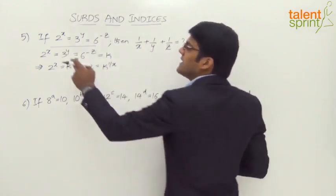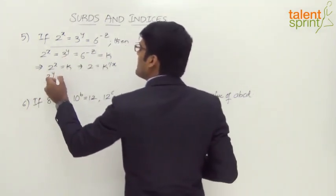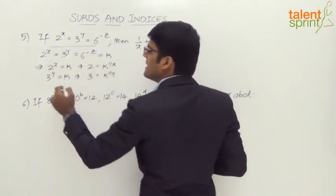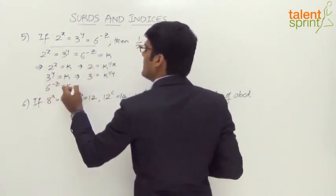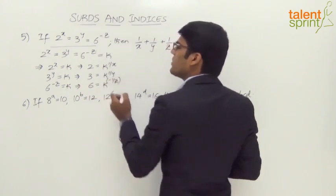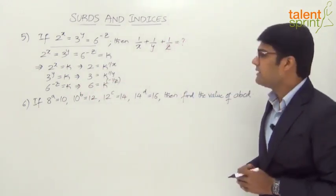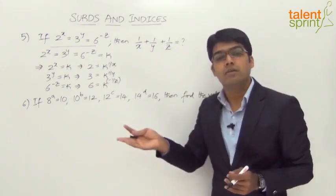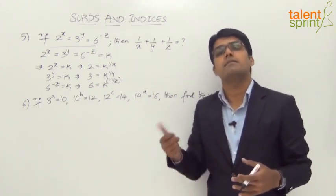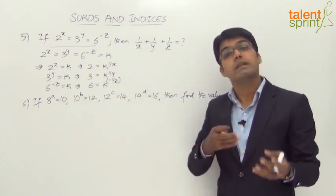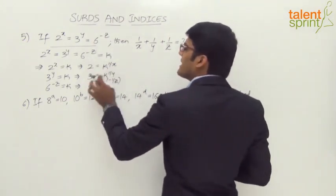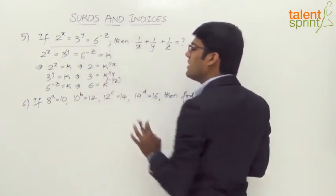Likewise, if 3^y = k, then 3 = k^(1/y). Similarly, 6^(-z) = k implies 6 = k^(-1/z). The negative sign remains — it becomes reciprocal so minus z becomes minus 1/z. So now we know: 2 = k^(1/x), 3 = k^(1/y), and 6 = k^(-1/z).